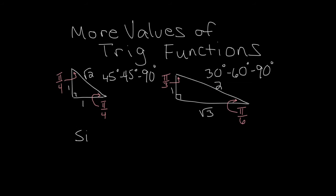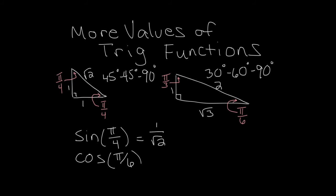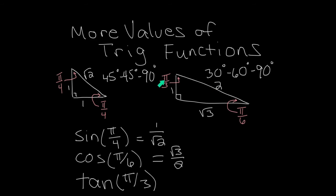Using these triangles we can find many values. Sine of pi over four: sine is opposite over hypotenuse, so looking at the pi over four angle, we get one over square root of two. Cosine of pi over six: cosine is adjacent over hypotenuse, so we get square root of three over two. Tangent of pi over three: tangent is opposite over adjacent, so at pi over three the opposite is square root of three and the adjacent is one, giving square root of three.